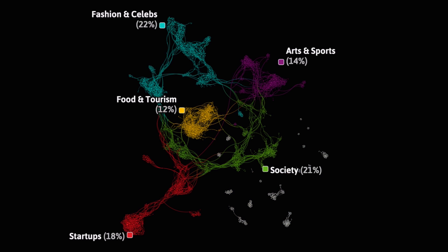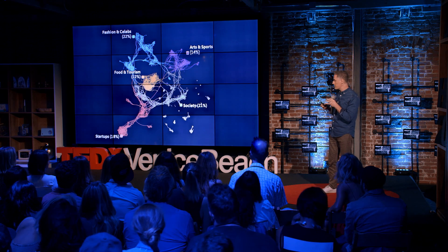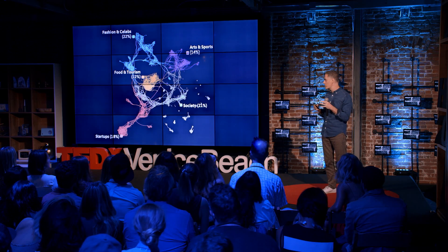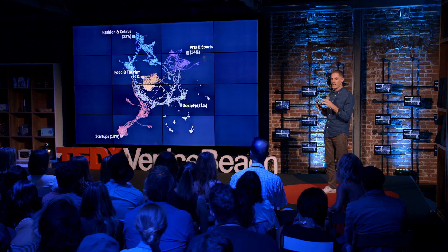The Venice Beach network is really more of a series of fairly distinct worlds. We can color those larger areas to highlight them better and understand the makeup of this network. You see four main clusters around the periphery: startups, fashion and celebrities, arts and sports, and society. And there's a fifth cluster right in the middle focused on food and tourism. Food and tourism is really the hub of this network — it's what tends to connect the other clusters that aren't really connecting to each other.